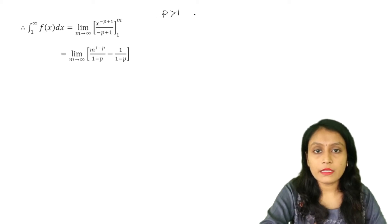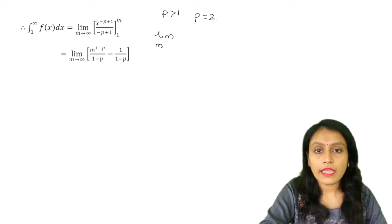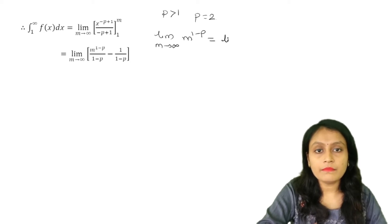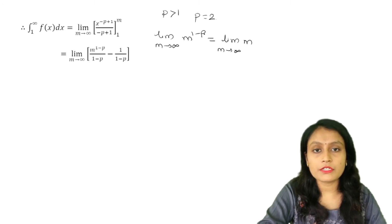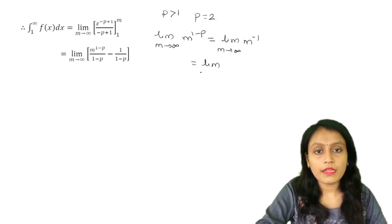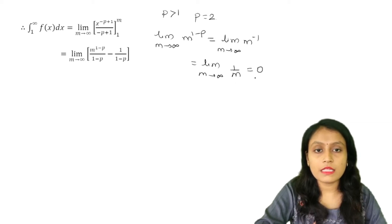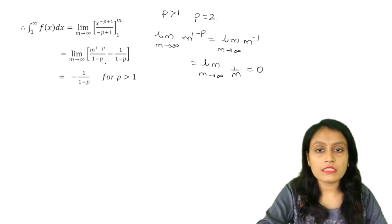Suppose we take P equal to 2. Then the limit m tends to infinity of m raised to (1 minus 2) = m raised to minus 1 = 1 upon m. As m tends to infinity, this limit tends to 0. So for P greater than 1, this limit is 0, and what remains is minus 1 upon (1 minus P), which is a finite value.